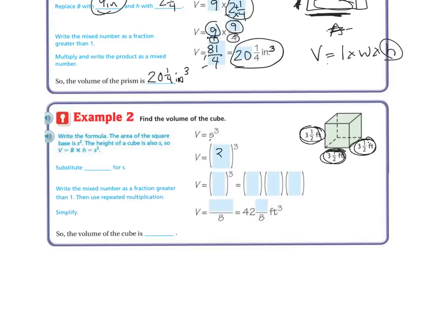So volume equals 3, we're going to substitute 3 1/2 feet, because that's what this is, 3 1/2 feet cubed. So if I'm doing that, first of all, I need to change my fraction.